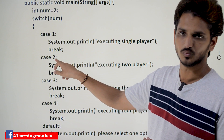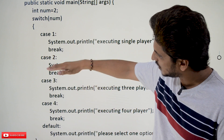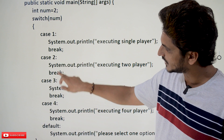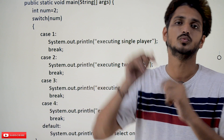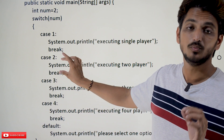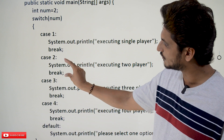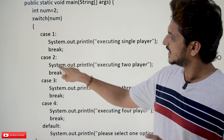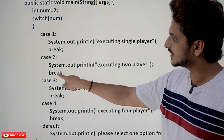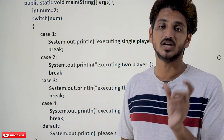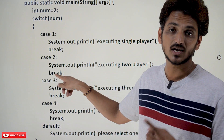If num is equal to 2 we go to case 2 because 2 is matching. Case 2 — after that, whatever we have written belongs to the block of code for case 2. This block of code is going to be executed; remaining blocks are not going to be executed. Here we have written one line: System.out.println of 'executing 2 player'. After that, at the end we have to mention the break statement. This is how the switch statement understands that this is the end of case 2.